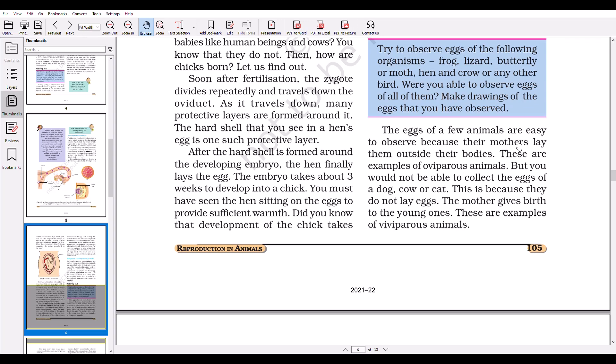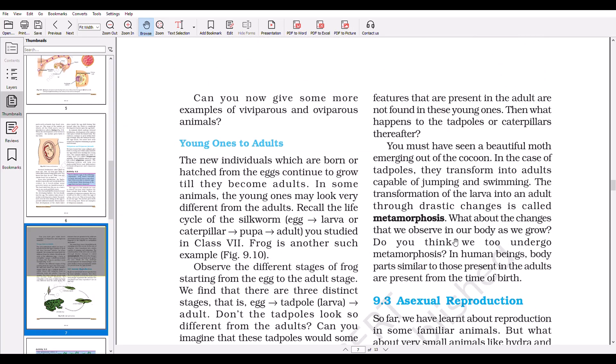The eggs of a few animals are easy to observe because their mothers lay them outside their bodies. These are examples of oviparous animals. But you may not be able to collect the eggs of a dog, cow, or cat. This is because they do not lay eggs. The mother gives birth to young ones. These are examples of viviparous animals.